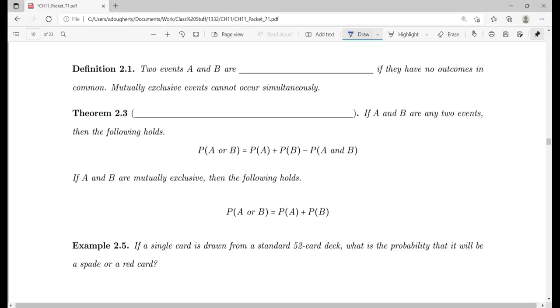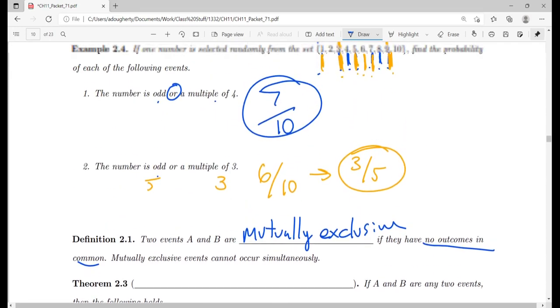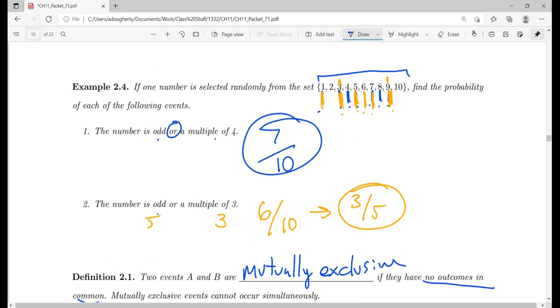Just like in chapter 2, two events A and B are called mutually exclusive if they have no outcomes in common. In other words, mutually exclusive events cannot occur simultaneously. Up here, if I picked a number from between 1 and 10, it could be odd, it could be a multiple of 4, but there is no such thing as a multiple of 4 that is odd.